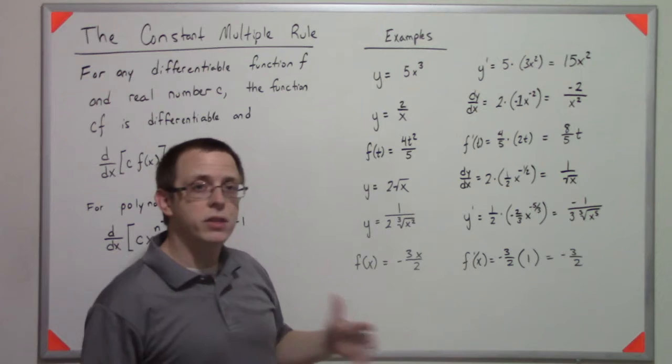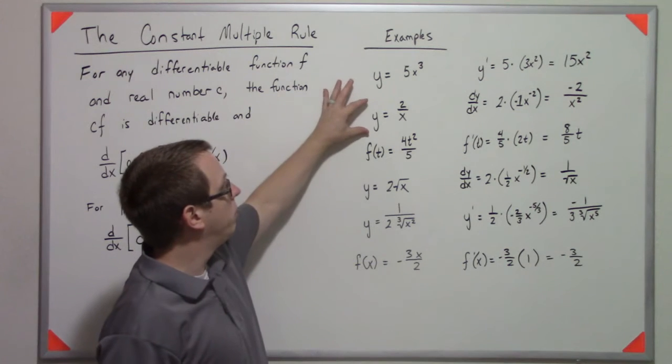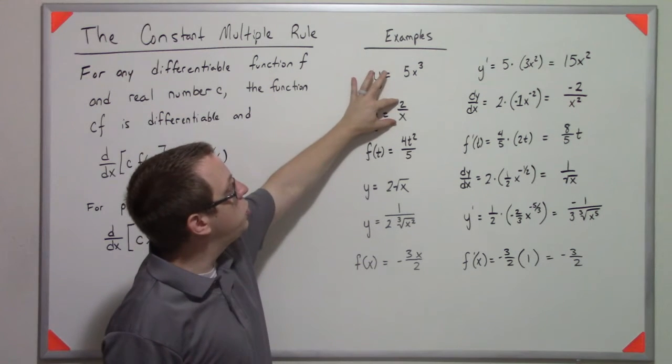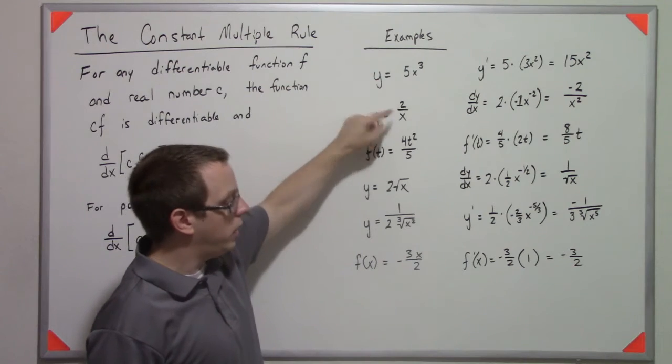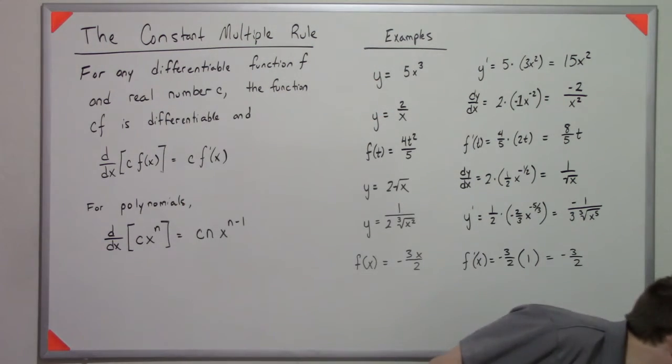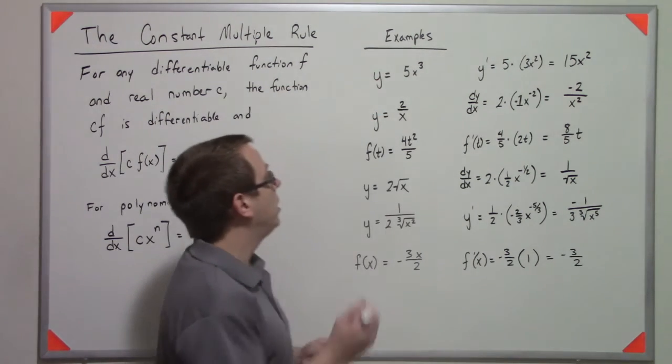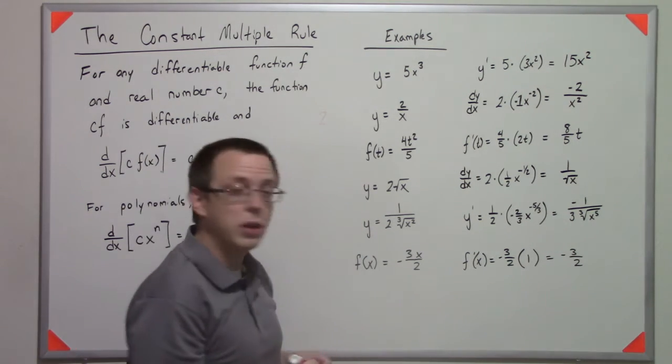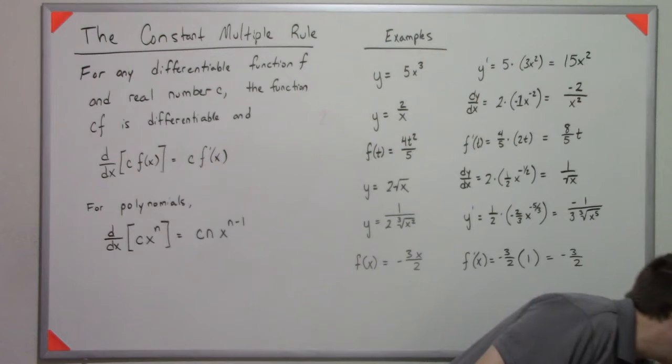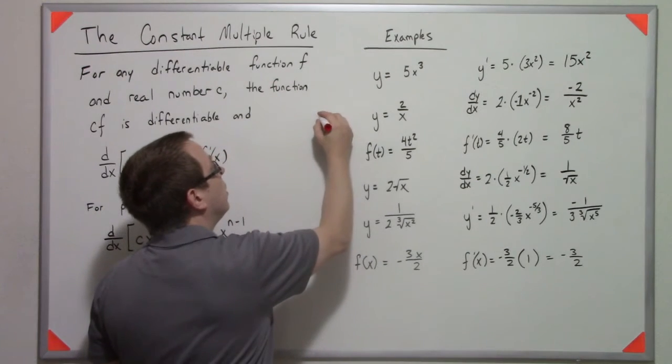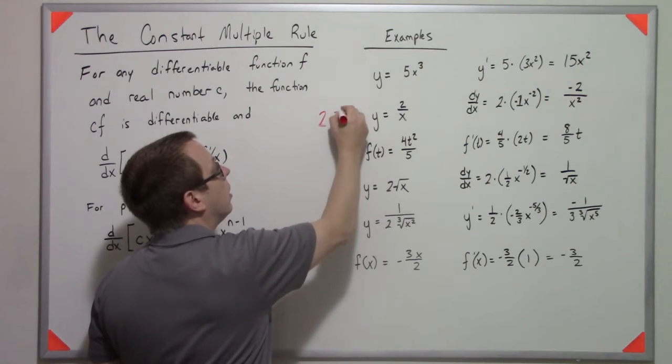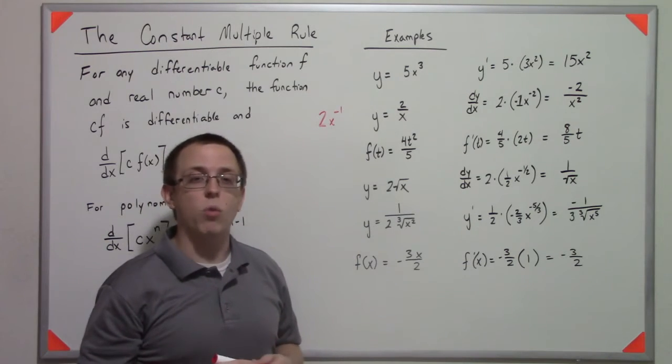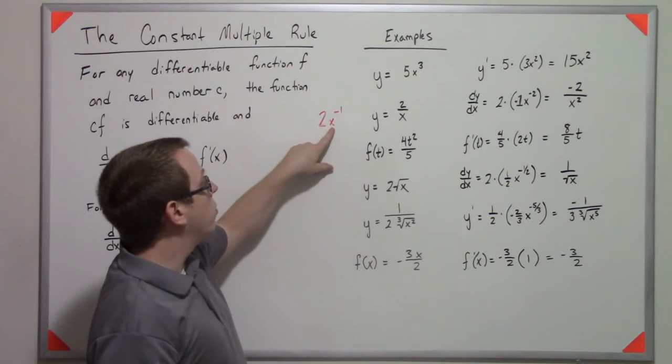The next one is a variation on the power rule. We have 2 over x. Now remember that probably a different and maybe easier way to write that would be 2, well, let me get a better marker, would be 2 times x to the negative 1.